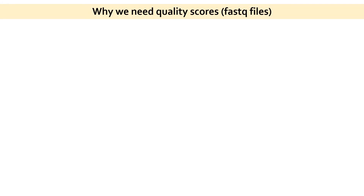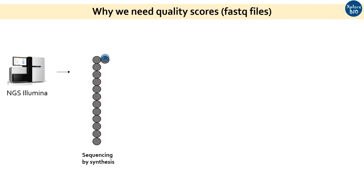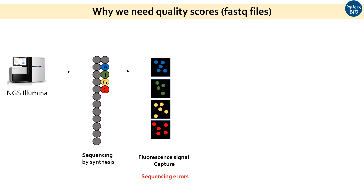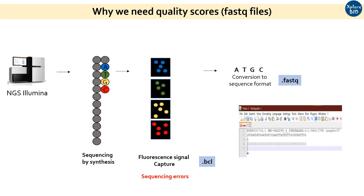Now let's understand why we need base quality information. The popular Illumina sequencing chemistry is based on sequencing by synthesis, where fluorescent-labeled nucleotides are added and captured by a highly sensitive camera. Each nucleotide is labeled with a different fluorophore, and it is essential to know that the captured fluorescent signal represents the actual nucleotide being added, because errors do occur during signal capture. This process of base fluorescence signal capture is known as base calling, which is saved as a BCL file. After the sequencing run is completed, the BCL file is converted to FASTQ formatted files. The quality line in the FASTQ format tells the quality of each base as symbols, where an exclamation mark represents the lowest quality or Q score, and the letter I represents the highest quality Q score of 40.